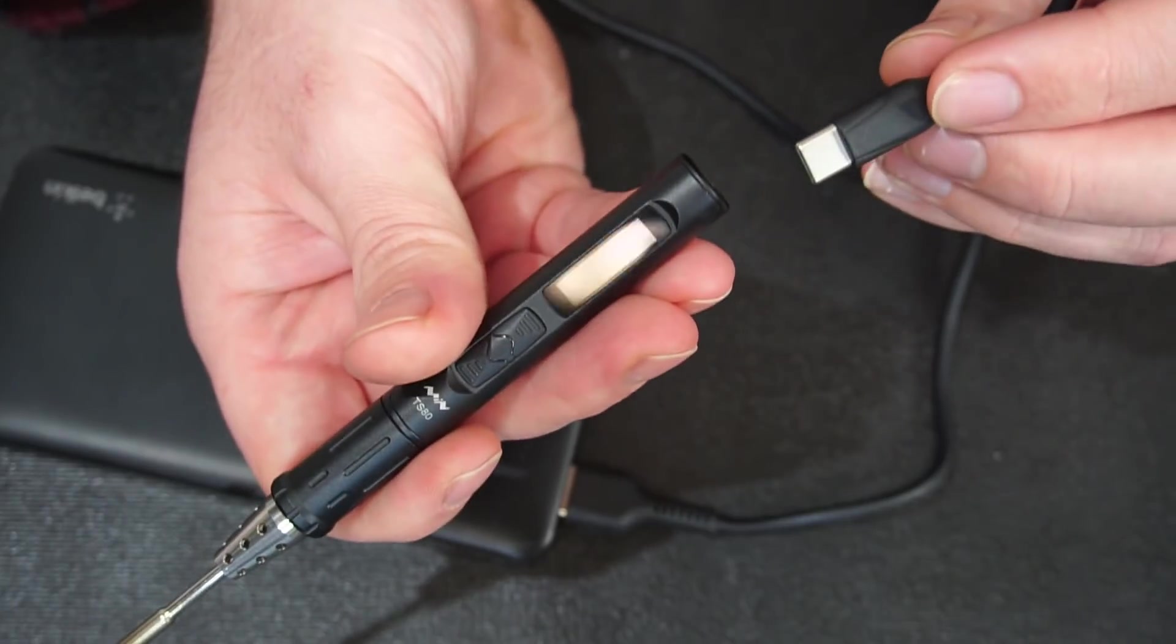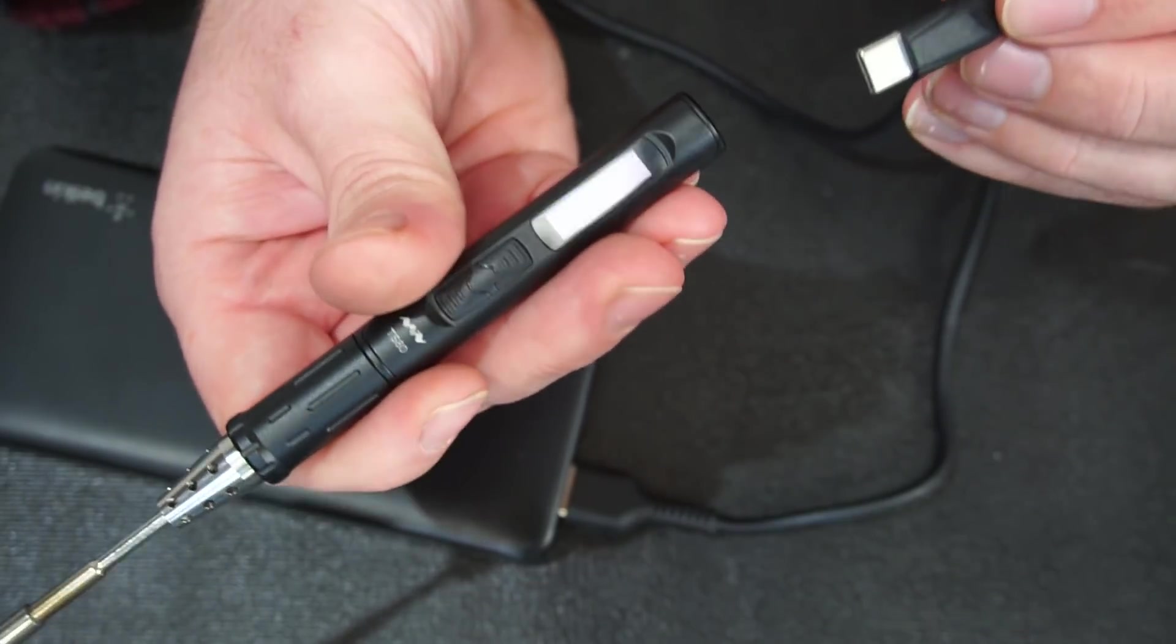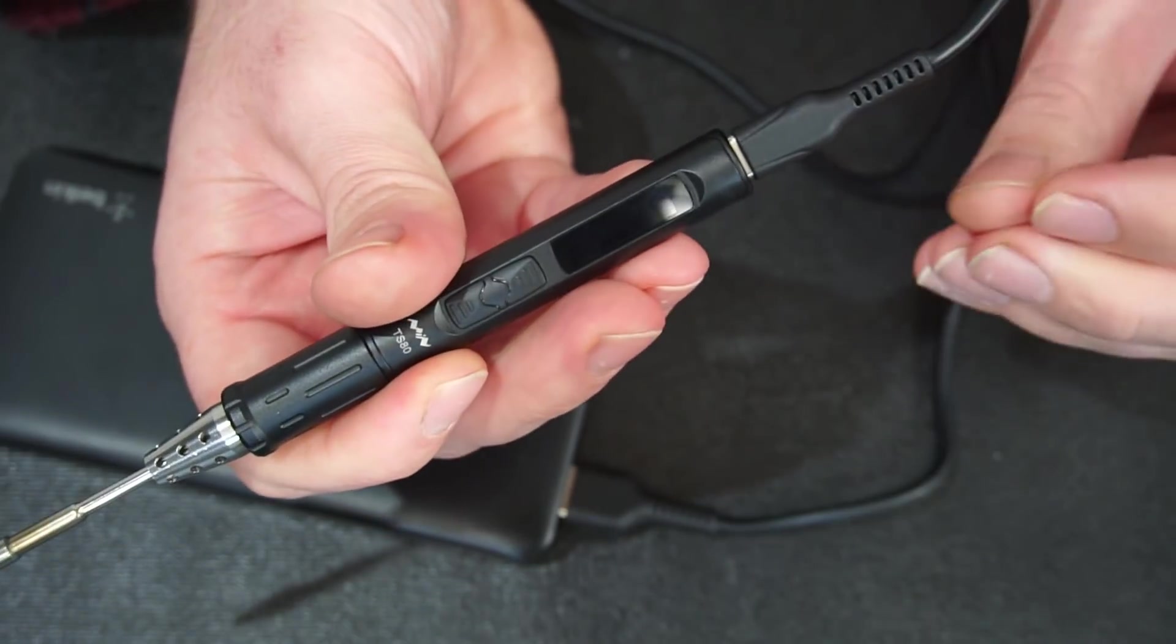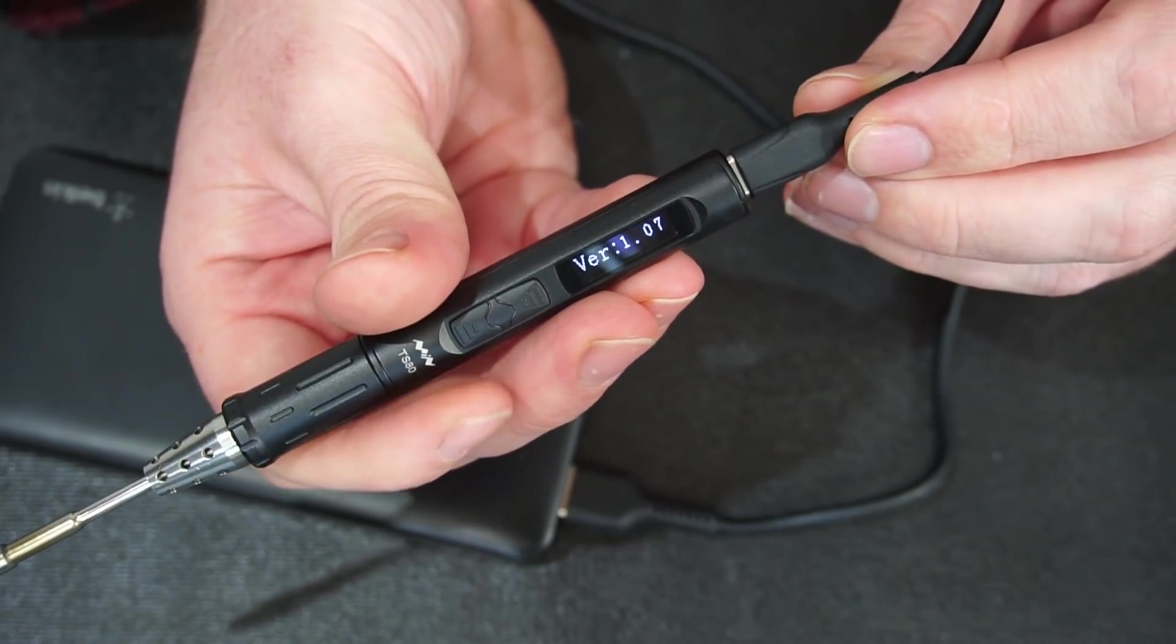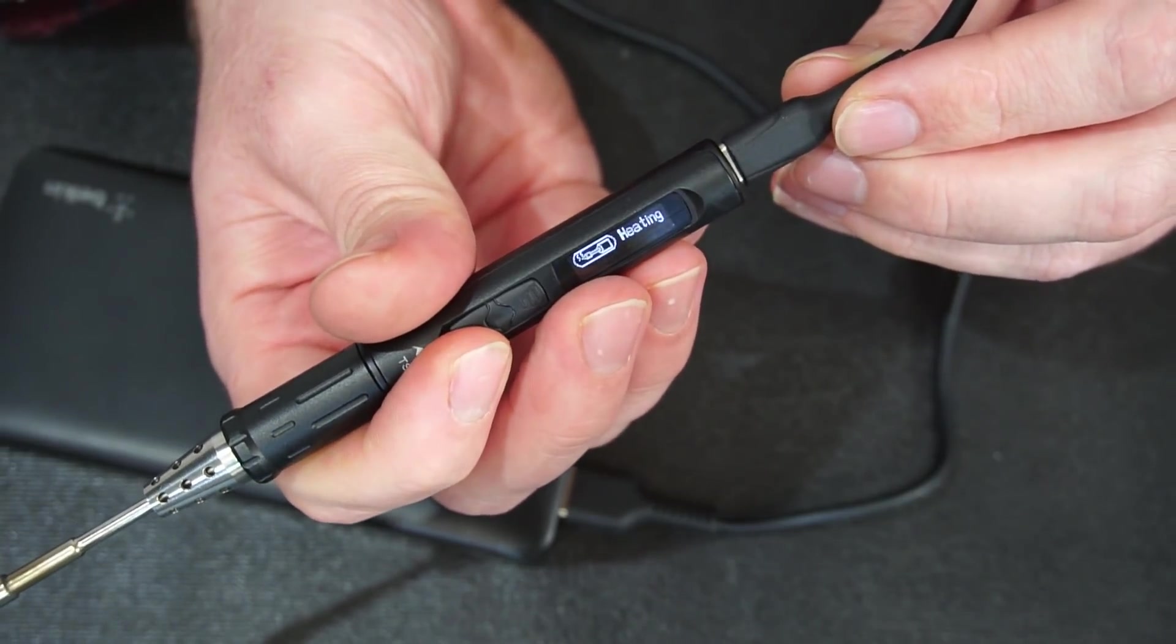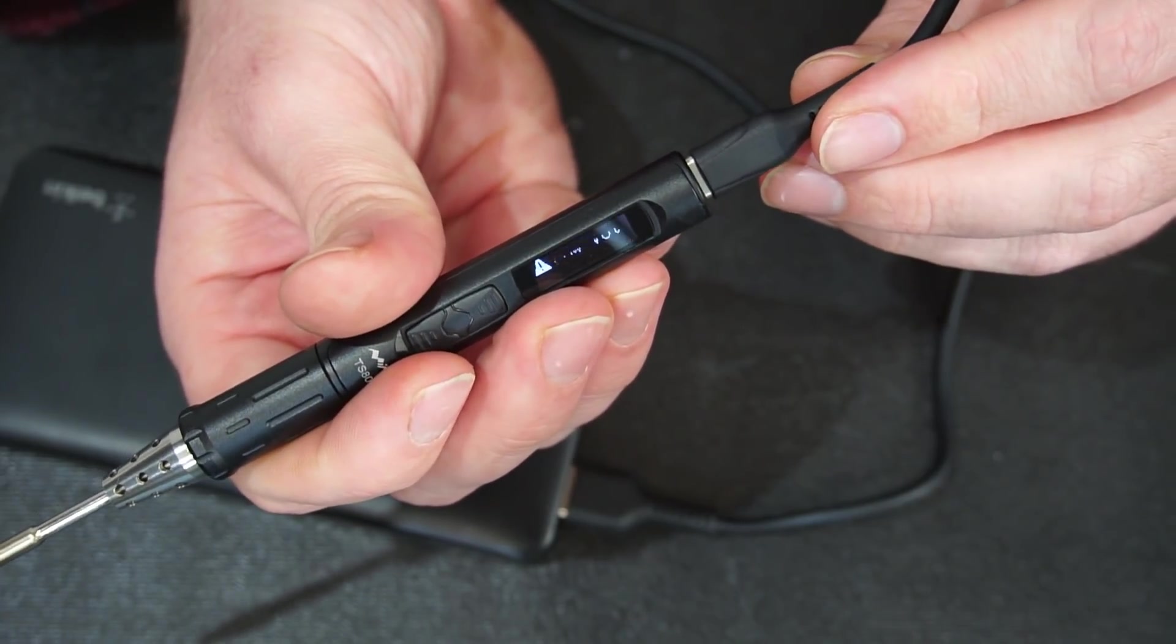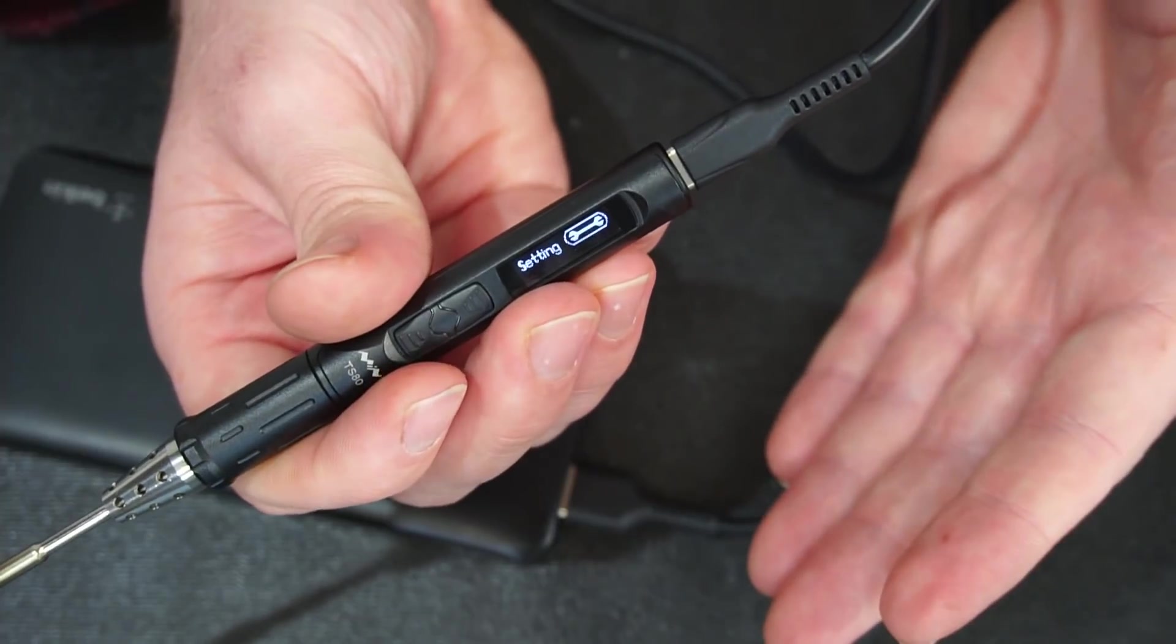If you're a curious sort like myself you'll wonder what happens when you try to power the TS-80 from a 5 volt USB outlet. Well it turns on. Let's try heating the tip up. Uh oh, low volts. So as the manufacturer said, really you've got to use a power bank or adapter that's capable of quick charge 3.0.